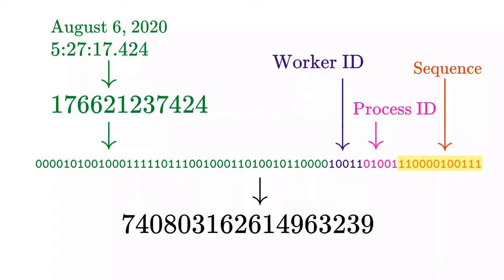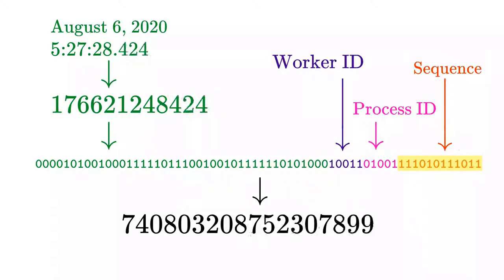Since there are 4,096 possible sequence values, this would mean that a duplicate ID could only be generated if a worker thread generated 4,096 IDs in the same millisecond.